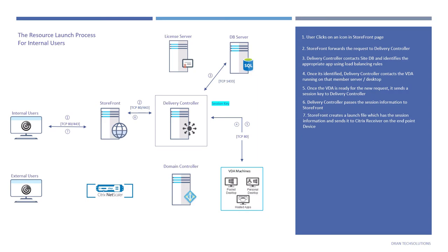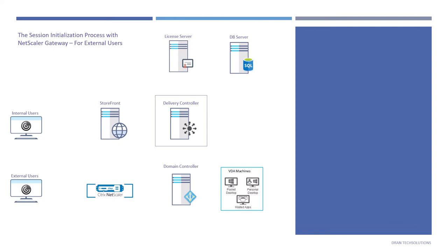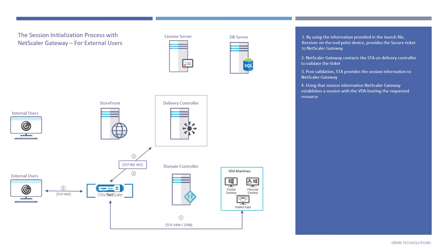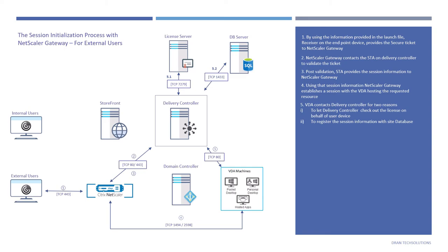Now let's move to the session initialization process with NetScaler Gateway — this is for external users. Receiver has the launch file and uses the information in it to provide the secure ticket to NetScaler Gateway. NetScaler Gateway contacts the Secure Ticket Authority on Delivery Controller to validate the ticket. Post validation, the STA provides the session information to NetScaler Gateway. Using that session info, NetScaler Gateway establishes a session with the VDA hosting the requested resource. At this point, the VDA contacts Delivery Controller for two main reasons: first, to let Delivery Controller check out a license on its behalf; second, to register the session info with the site database. Once that's done, NetScaler Gateway forwards all session traffic between the Receiver and the VDA, and the user should be able to use their session.